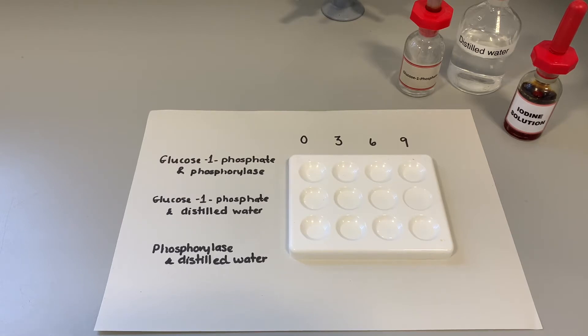We can test for the presence of starch using iodine solution because if starch is present our iodine solution will turn a blue-black color from the original brown color that you can see.